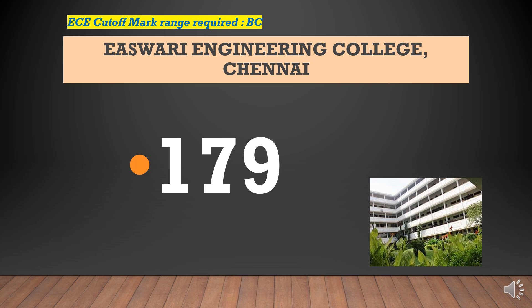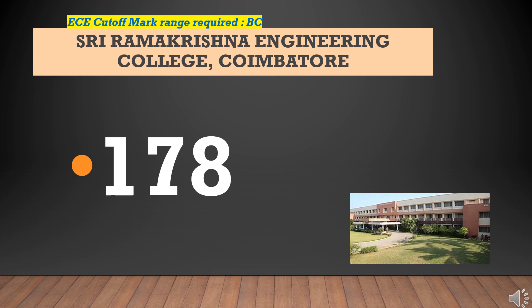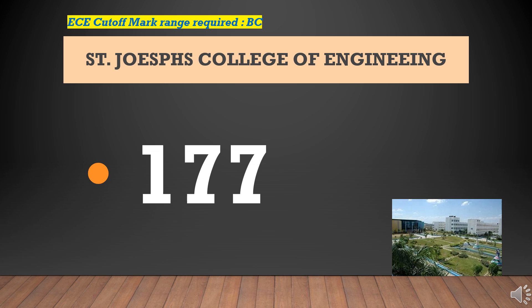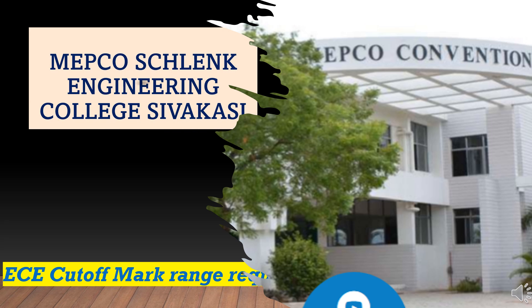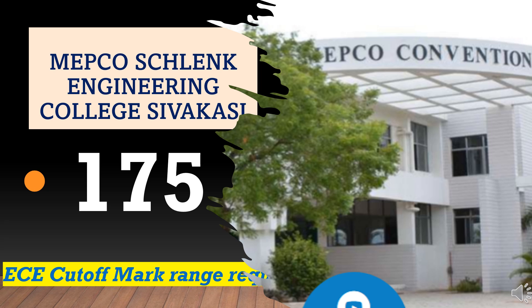Iswari Engineering College: Cut-Off Required for ECE BC is 179. Shri Ramakrishna Engineering College: Cut-Off Required for ECE BC is 178. St. Joseph's College of Engineering: Cut-Off Required for ECE BC is 177. Shri Iswar College of Engineering Coimbatore District: Cut-Off Required for ECE BC is 177. Mepco Schlenk Engineering College: Cut-Off Required for ECE BC is 175.